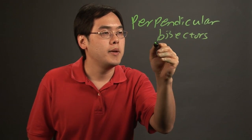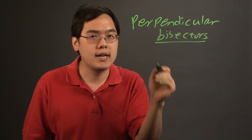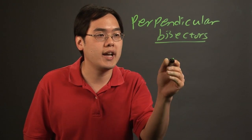Now a bisector is a line that cuts another line in half.